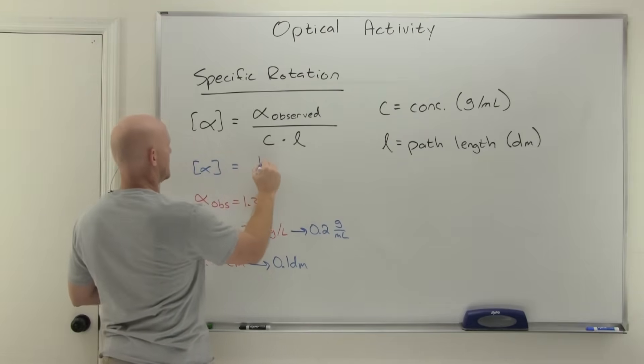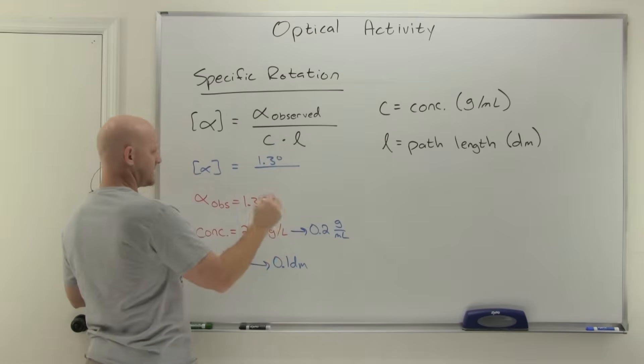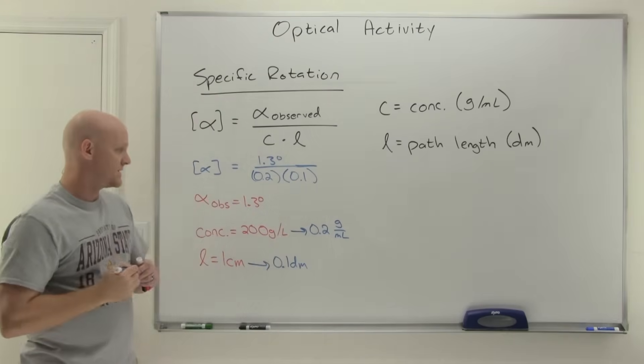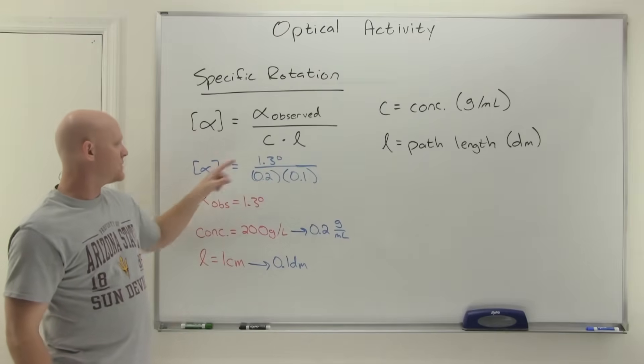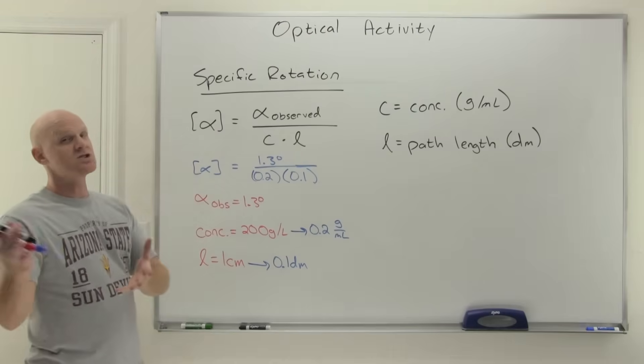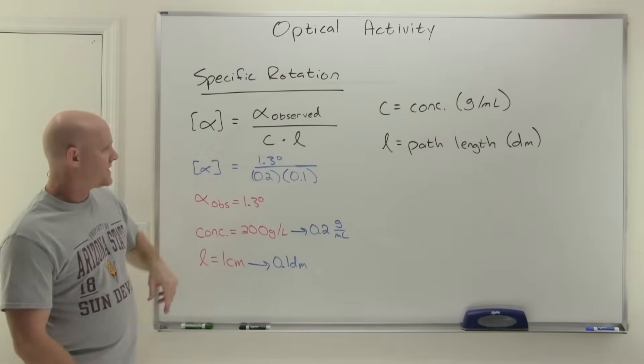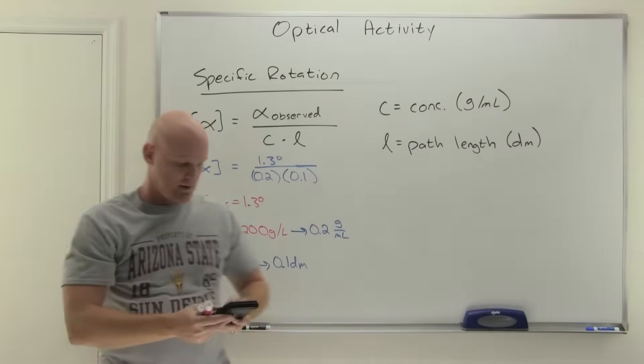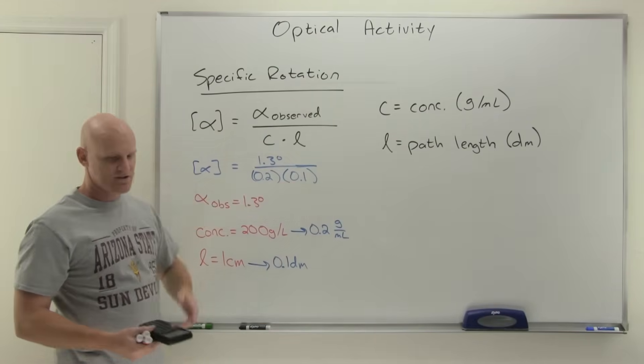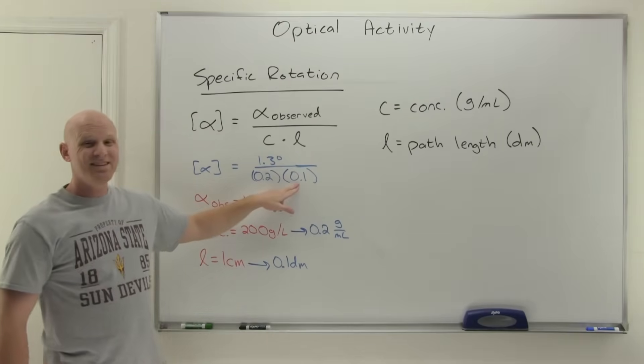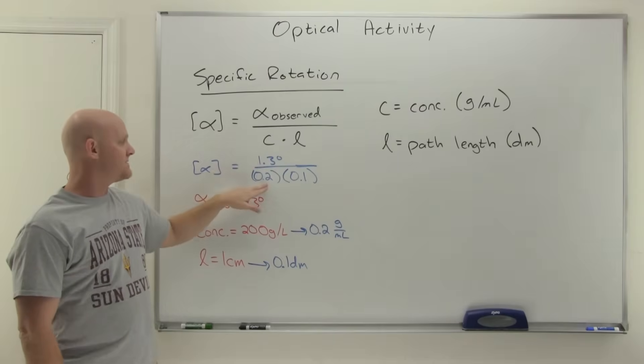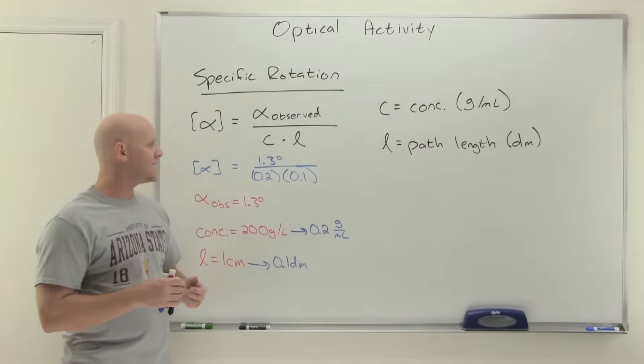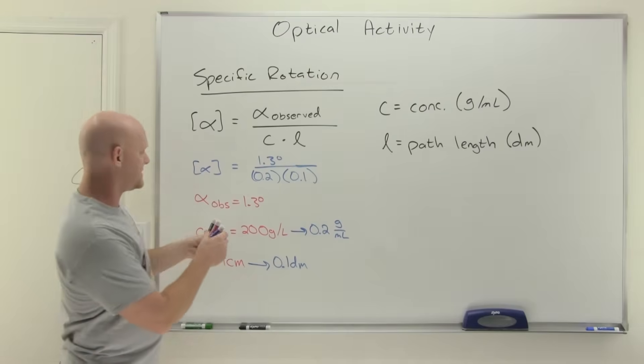So this corresponds to 0.2 grams per milliliter. That's what will actually go in the formula here. And then one centimeter, there's 10 centimeters in a decimeter. So this would correspond to one tenth of a decimeter. And that's what will get plugged into our calculation. So our specific rotation would equal 1.3 degrees all over a concentration now of 0.2 grams per milliliter and 0.1 path length, 0.1 decimeters. And we'll just do this in our head. So dividing by 0.1 is the same thing as multiplying by 10. That's going to take this up to 13. Dividing by 0.2, which is 1 fifth, is the same thing as multiplying by 5. And so really, we're just going to end with 5 times 13. 5 times 10 is 50. And 5 times 3 is 15. So we're going to get 65 degrees here.